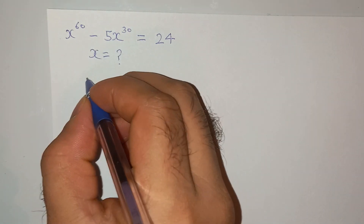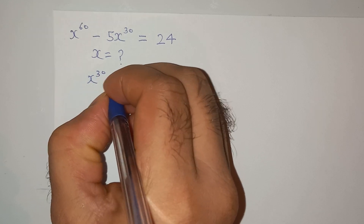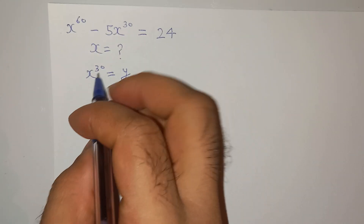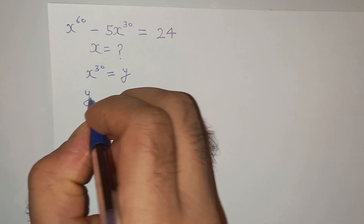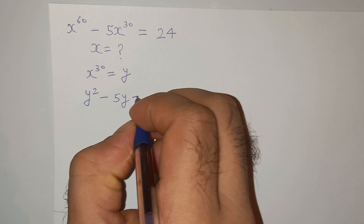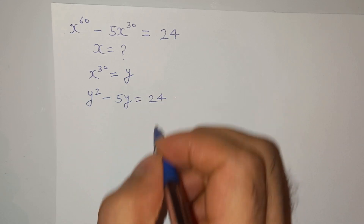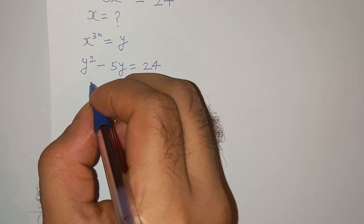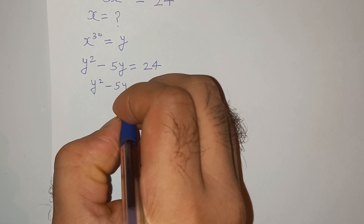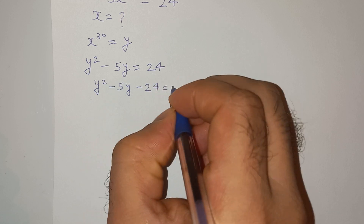We can assume x power 30 equals to y. So we can write this equation as y square minus 5y equals to 24. This is now a quadratic equation: y square minus 5y minus 24 equals to 0.